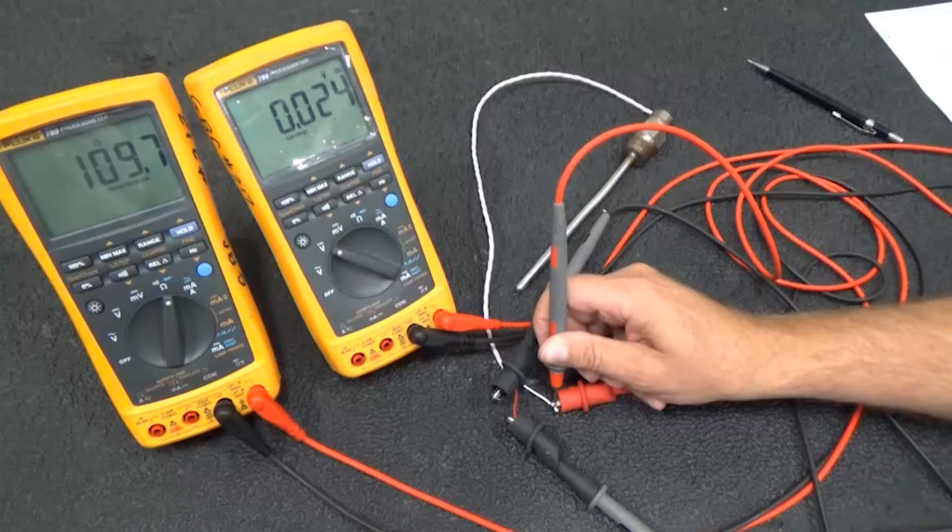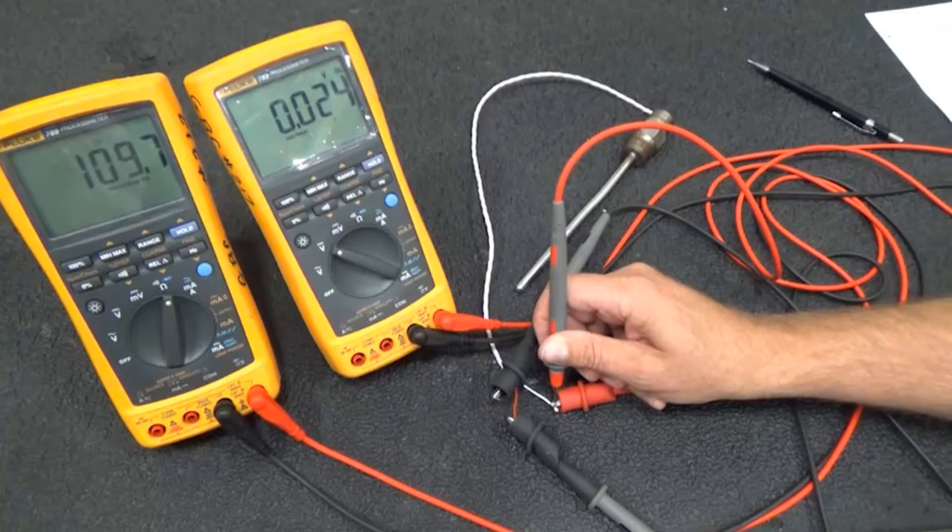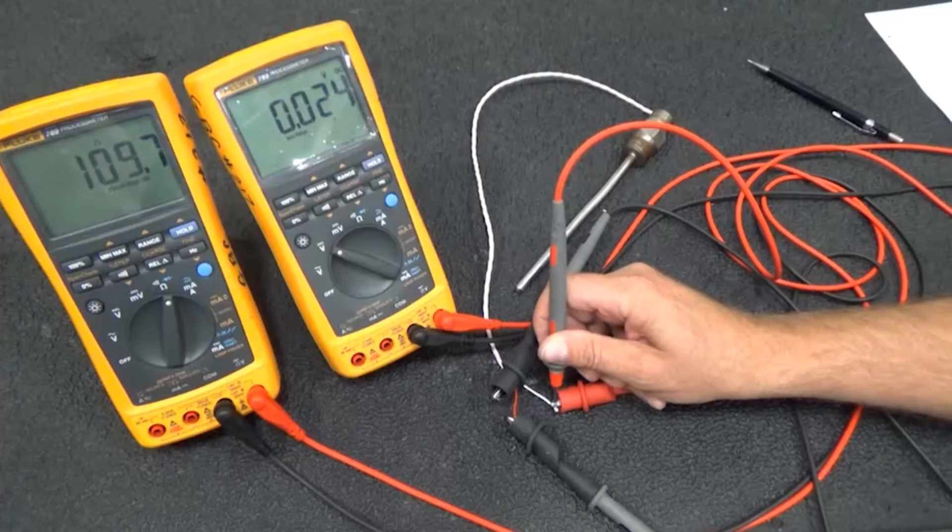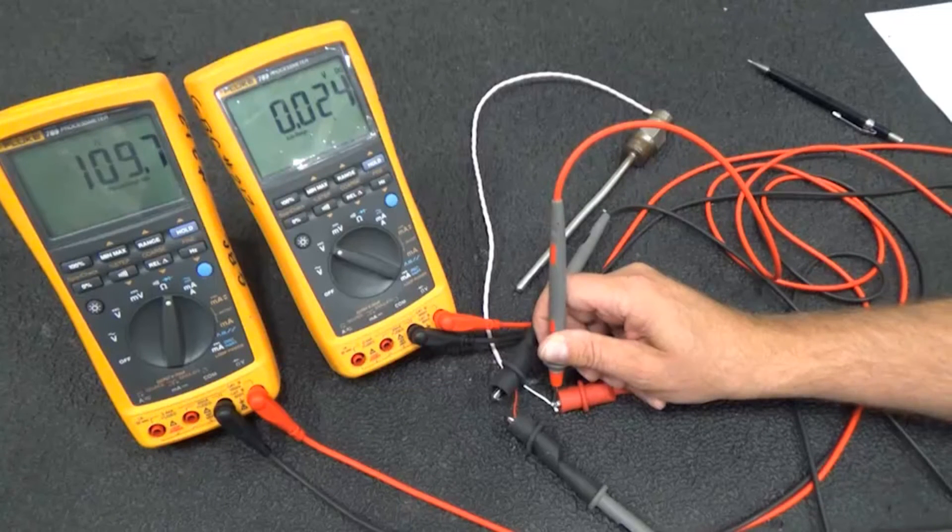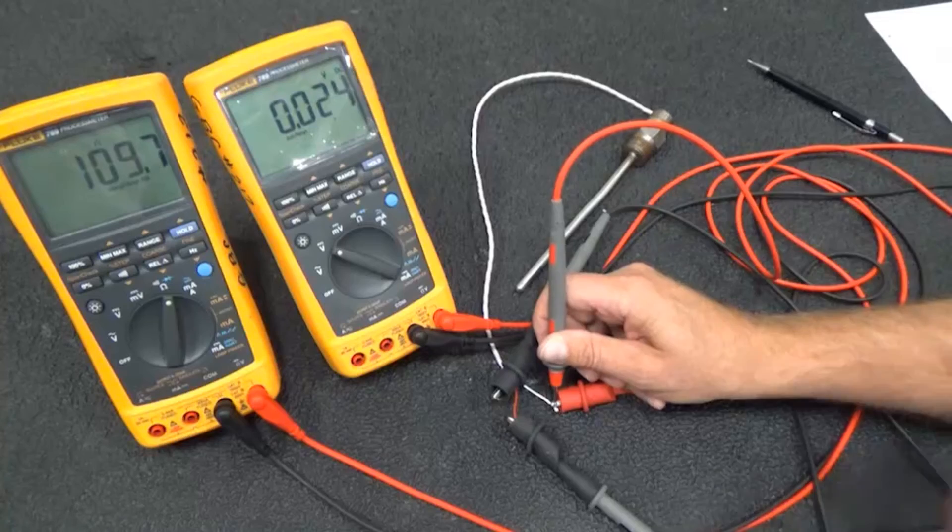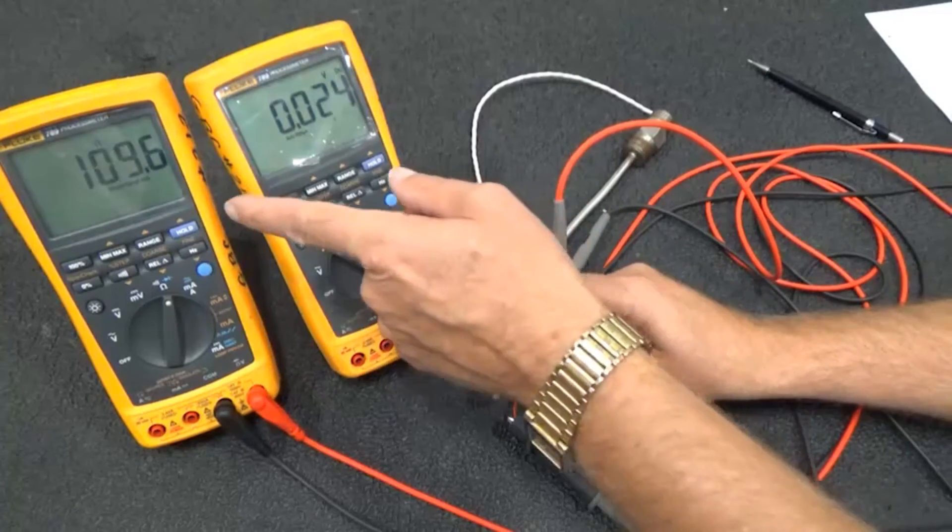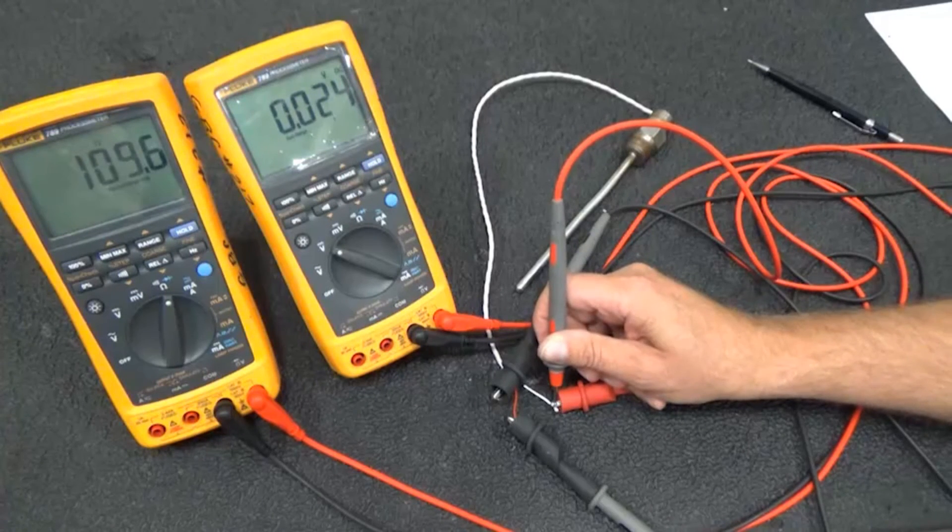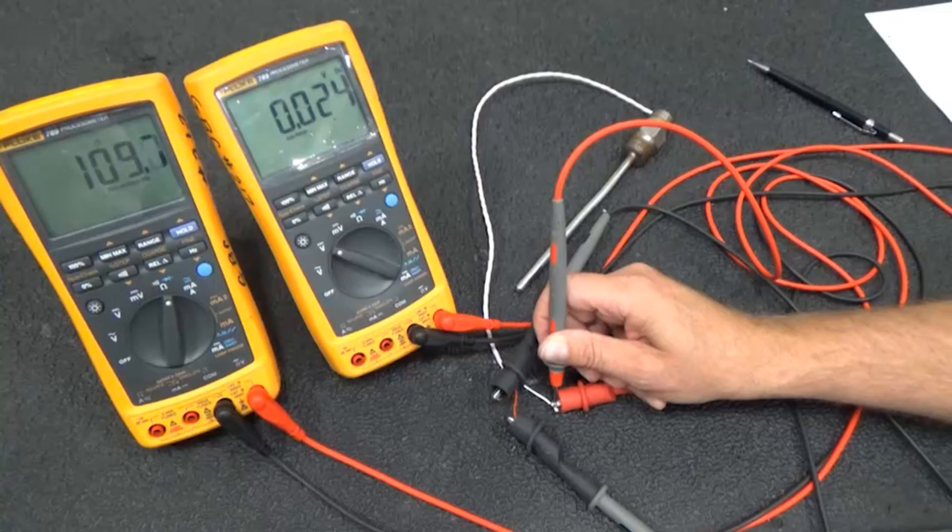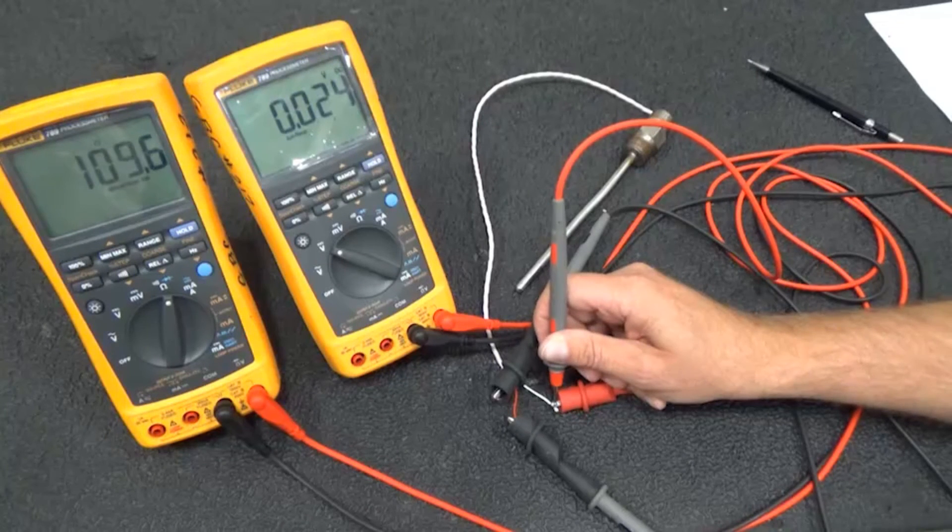Now we could use Ohm's law to determine what the test current is. The test current is going to be equal to the voltage drop, 24 millivolts, divided by 109.6 Ohms. And I think that's going to work out to be just a little bit more than 0.2 milliamps, somewhere right around there.